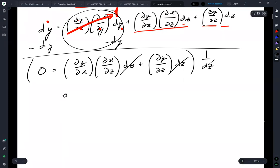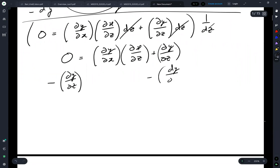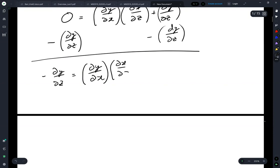So we wind up with zero is equal to dy by dx, dx by dz plus dy by dz. So we subtract dy by dz from both sides, giving us minus dy by dz is equal to dy by dx, dx by dz.